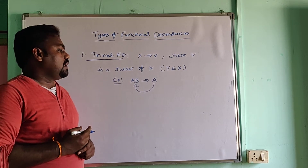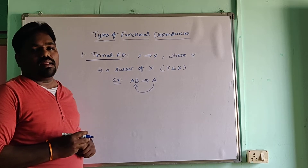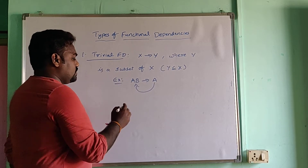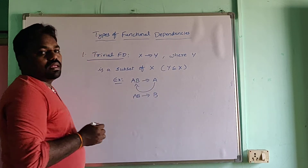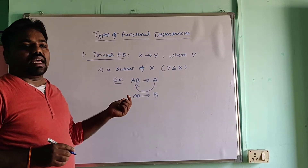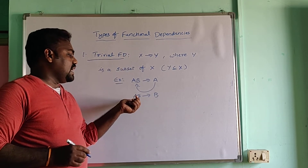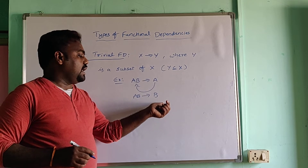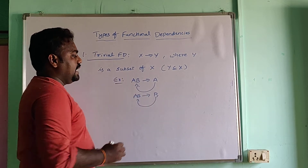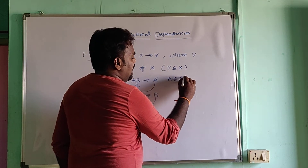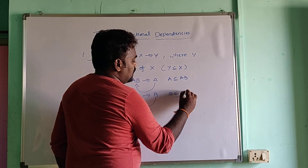These types of functional dependencies are called trivial functional dependencies. Another example is AB to B — this is also a trivial functional dependency, because B is always a subset of AB. Here A is a subset of AB, and B is also a subset of AB.